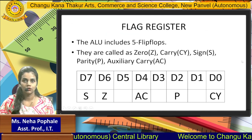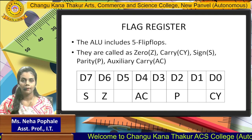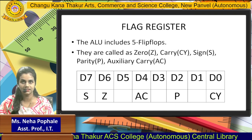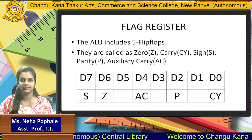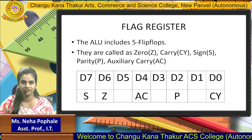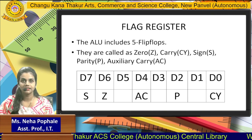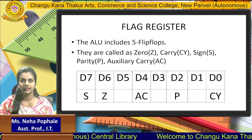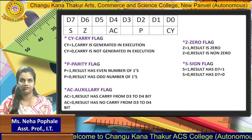Flag register is also known as a status register, showing the status of the instructions that we are going to execute. After the execution of every instruction, you should check the status register or the flag register, which will help you to write the rest of the code or minimize the code by seeing the status of the previous instruction. This flag register basically has 5 flags: zero flag, carry flag, sign flag, parity flag, and the auxiliary carry flag. The flag register is an 8-bit register, but all 8 bits are not used — 5 are used and 3 are unused.